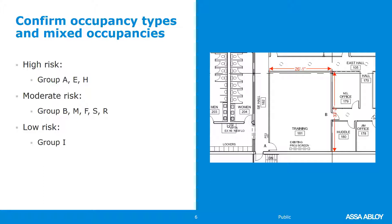A lower-risk occupancy type is Group I Institutional, where you have staff and the people are not capable of self-preservation — detention or correctional facilities, hospitals, nursing homes, assisted living facilities. Because of the presence of staff and mandatory full sprinklering, they're considered lower risk, and you are able to lock the door on the egress side in those types of occupancies.